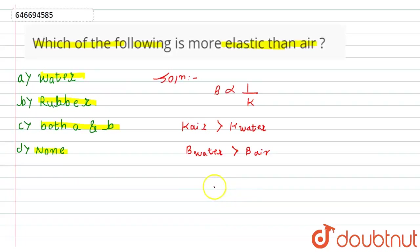Less compressibility gives us more elasticity. From here we can write that water is more elastic than air.